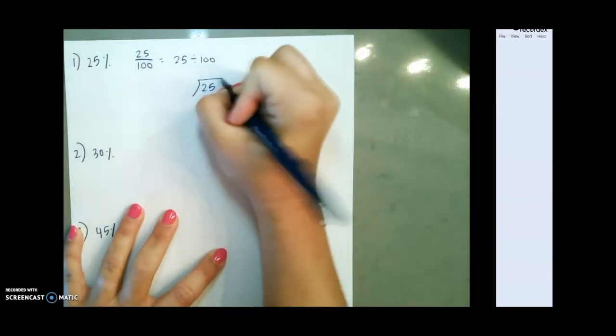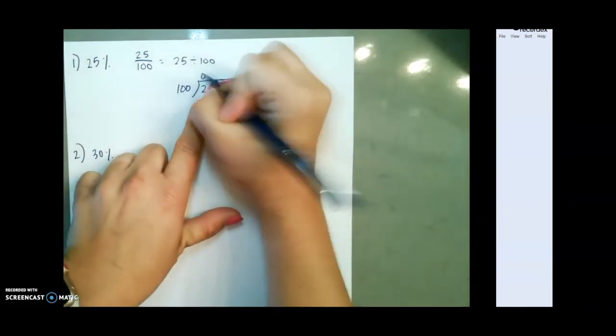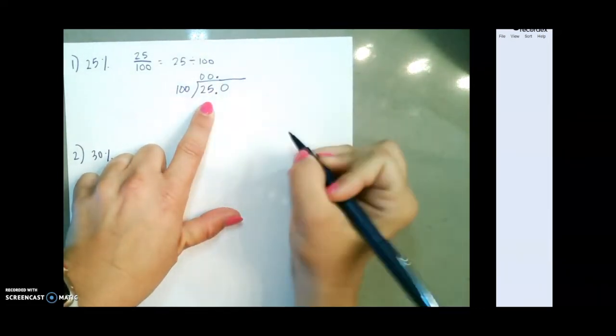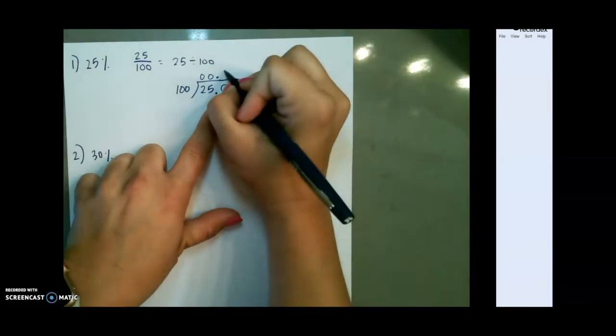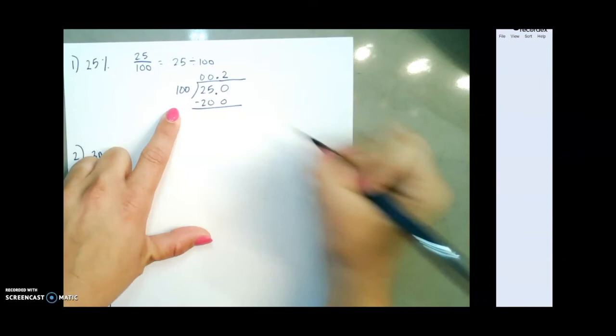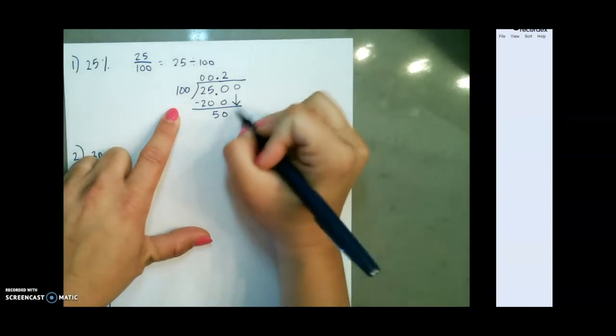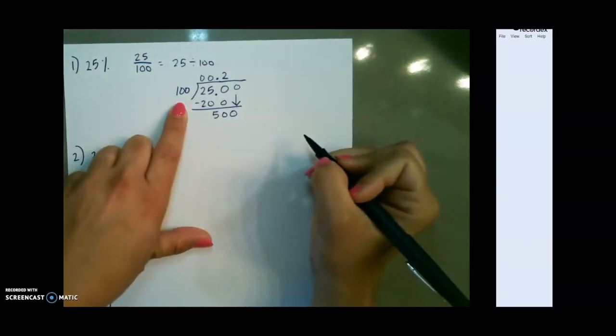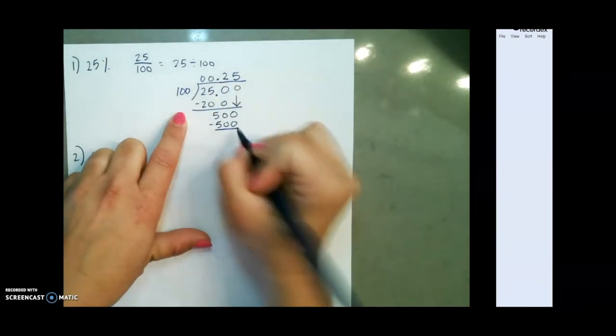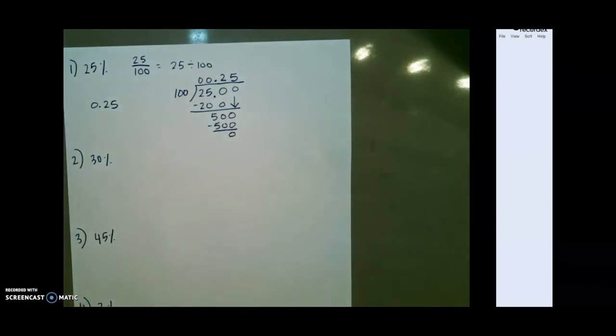So if I do 25 divided by 100, 100 cannot go into 2, and it can't go into 25. So I need to add a decimal and add a zero. 100 goes into 250 two times. 2 times 100 is 200, subtracting, leaving us with 50. We now need to add another zero and bring it down. 100 goes into 500 five times, leaving us with zero at the bottom. So our decimal is 0.25 or 25 hundredths.